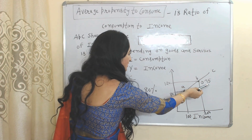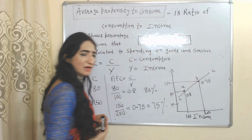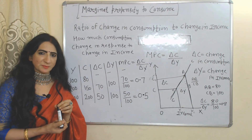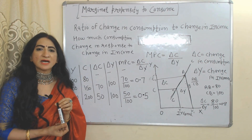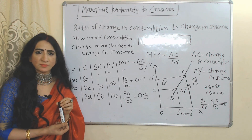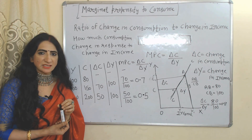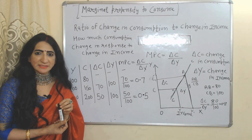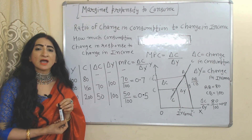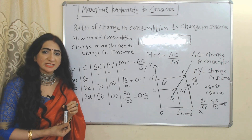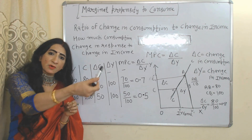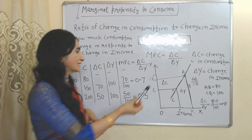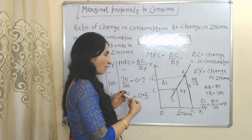Now we will see the marginal propensity to consume (MPC). MPC is the ratio of change in consumption to change in income. It shows how much consumption changes in response to a change in income. The formula for calculating MPC is delta C over delta Y.